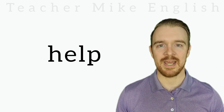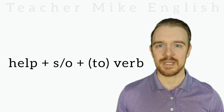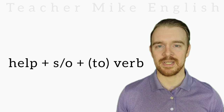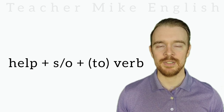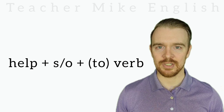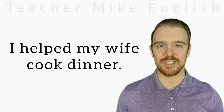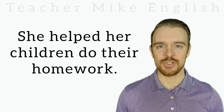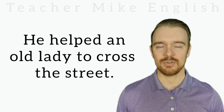When we use help as a causative verb, the structure is: help someone (to) do something. The word 'to' is in parentheses because it is optional — you can include it if you want to, but you don't need to. Here are some examples: I helped my wife cook dinner. She helped her children do their homework. He helped an old lady to cross the street.